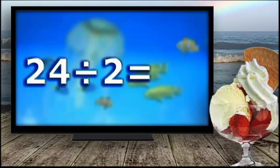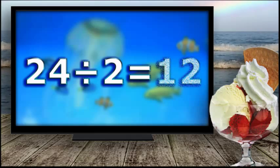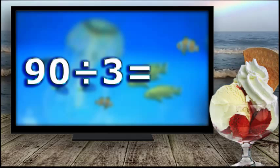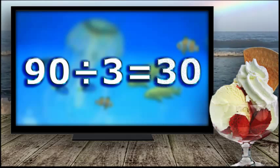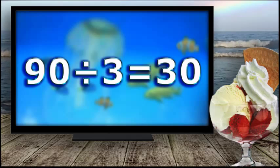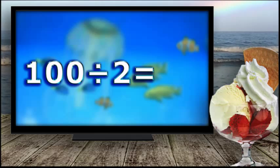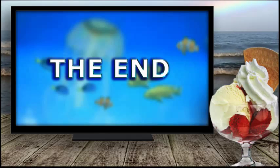24 divided by 2 equals 12. 90 divided by 3 equals 30. The End.